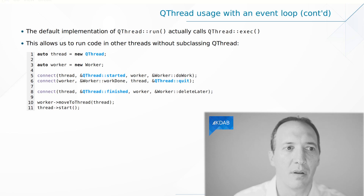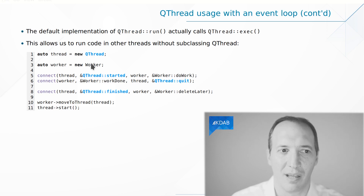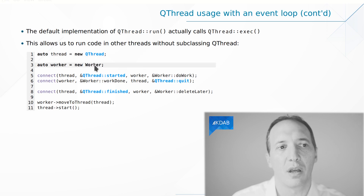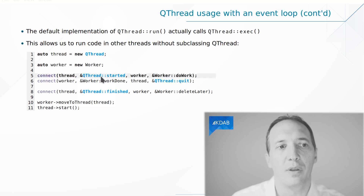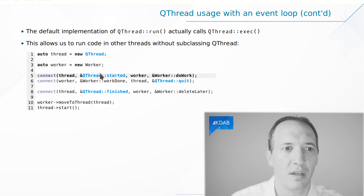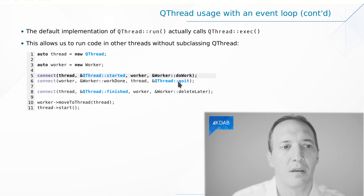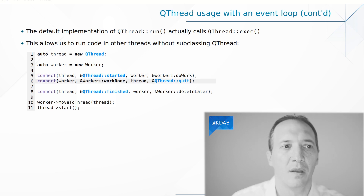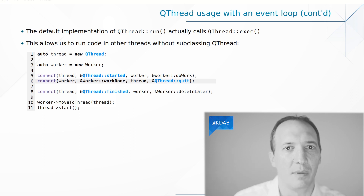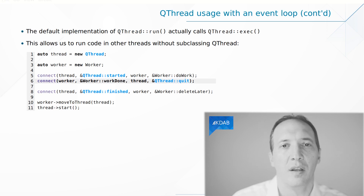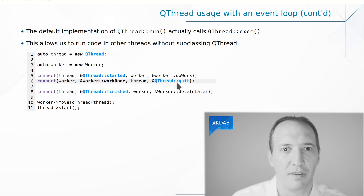What we can do, like in this example, is create a QThread without deriving — just new QThread. Then we are going to create a worker object; this is simply the object where the work is going to be done. We connect the started signal of QThread to a slot in the worker, which is where the work is going to be done. This way, when the thread is ready and has started, the worker is going to do the work. When the worker has results for us, it will emit a signal — let's call it work done. We can connect to that to get the results, but also we can connect this signal to the quit method of the thread, and this is how the thread will actually finish.